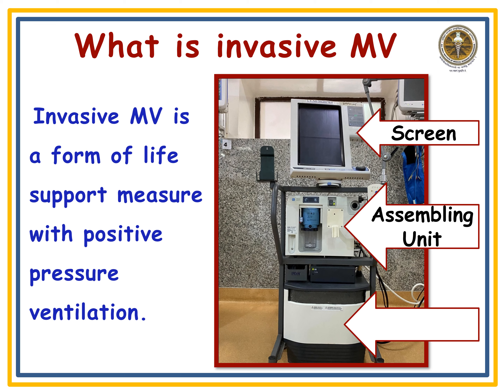At the back of the ventilator there are two tubings: one for medical air and another for the oxygen hose pipe. You connect those tubings to the medical air source and the oxygen source respectively. There is also a power cord for power supply. Connect all these things before starting your ventilator.